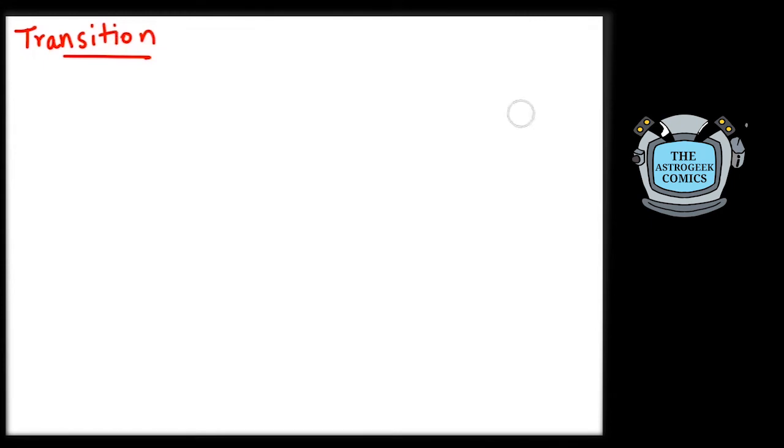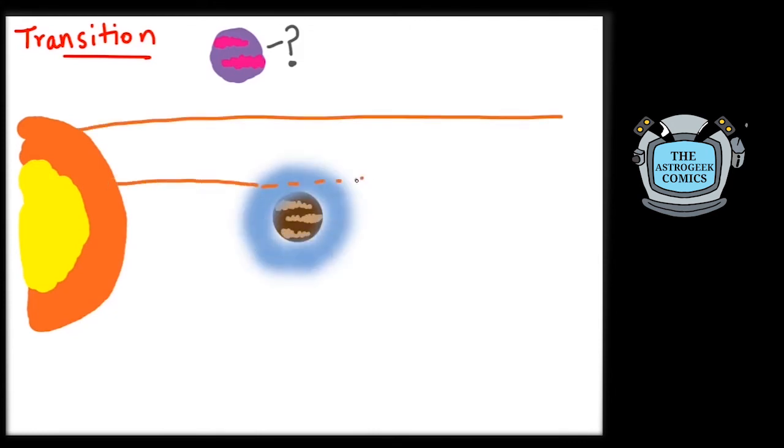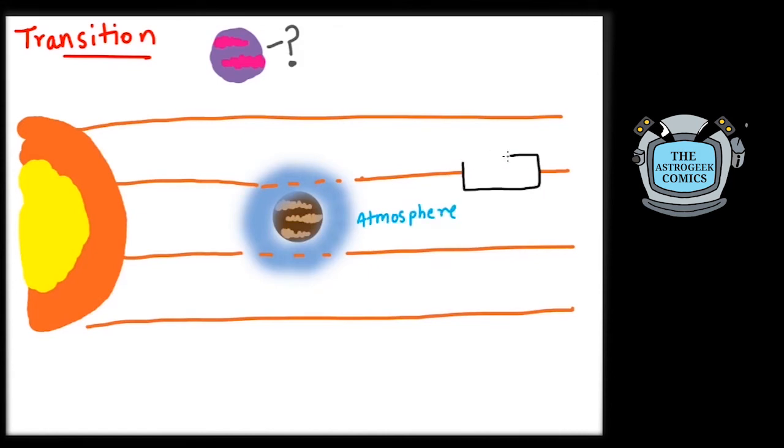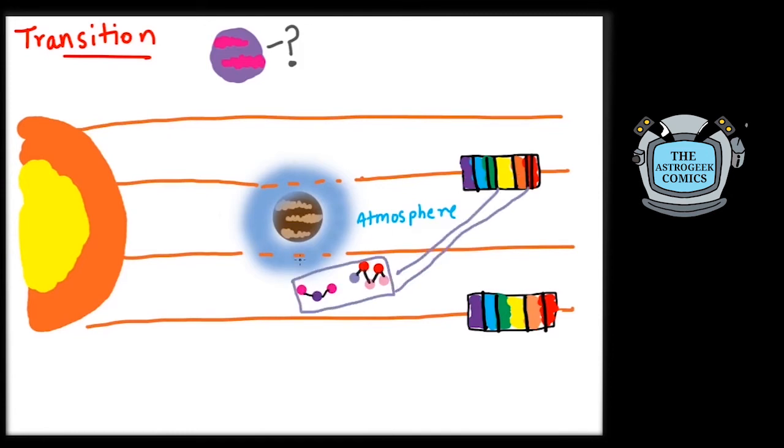The transit method is not only useful to detect planets, but after their detection, it can also be used to study them. As a planet transits in front of its host star, some of the light from the star passes through its atmosphere before reaching us. Analyzing this light's spectrum, we can see absorption lines at wavelengths which were absent when the planet was not transiting.